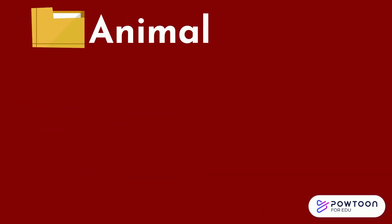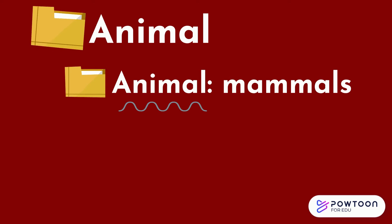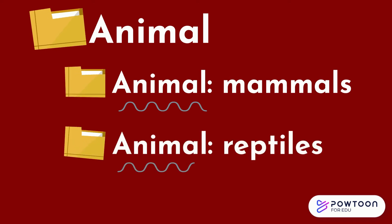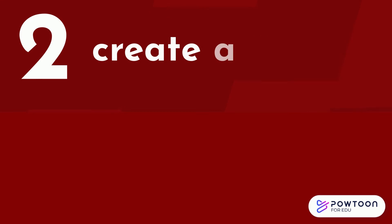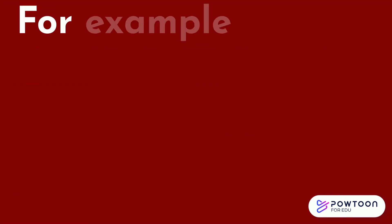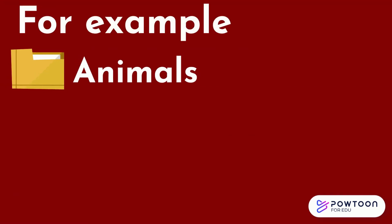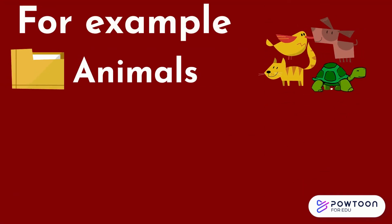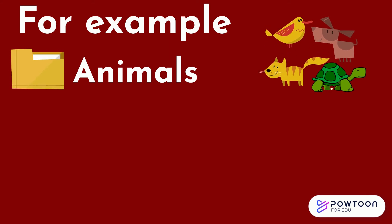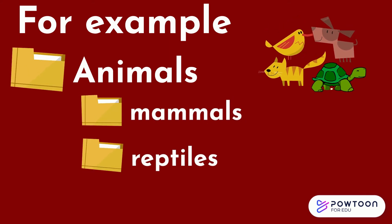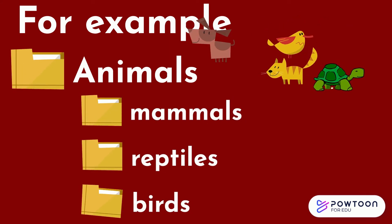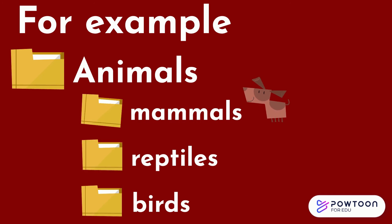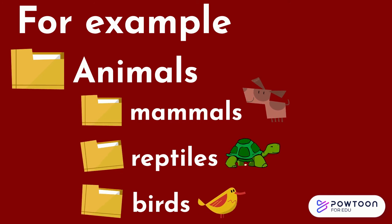Such as 'animal, mammals' or 'animal, reptiles.' Second, create a hierarchy within your folders. For example, animals could be used as your broad collection, and the different types of animals could be used as your sub-collections, such as mammals, reptiles, and birds.